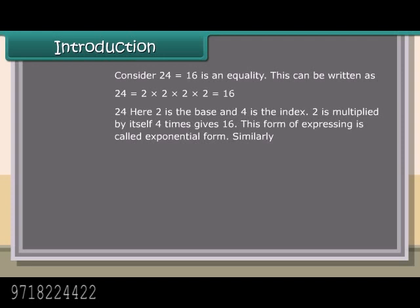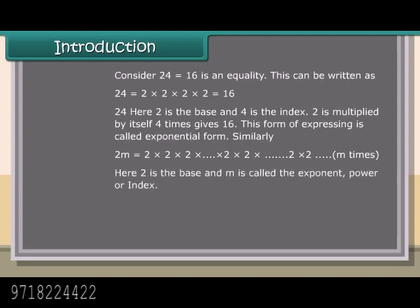In 2 raised to the power 4, here 2 is the base and 4 is the index. 2 is multiplied by itself 4 times, giving 16. This form of expression is called exponential form. Similarly, 2 raised to the power m equals 2 into 2 into 2 and so on, m times. Here 2 is the base and m is called the exponent, power, or index.